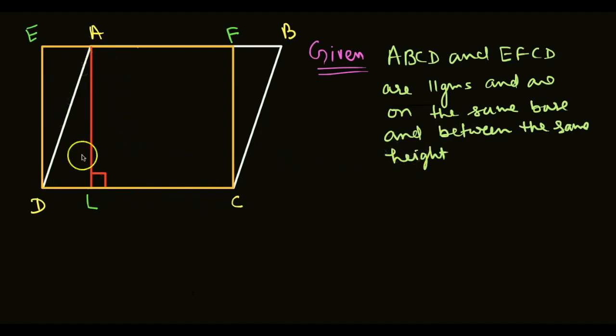the areas are equal. Then area of A, B, C, D is equal to area of E, F, C, D.